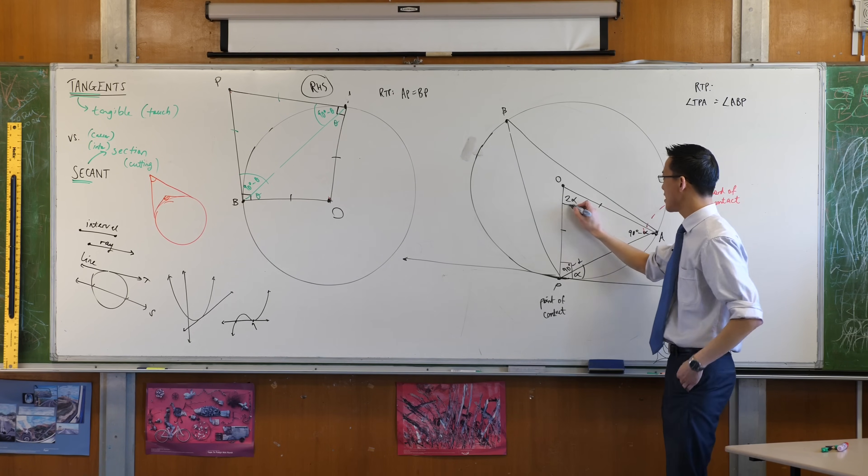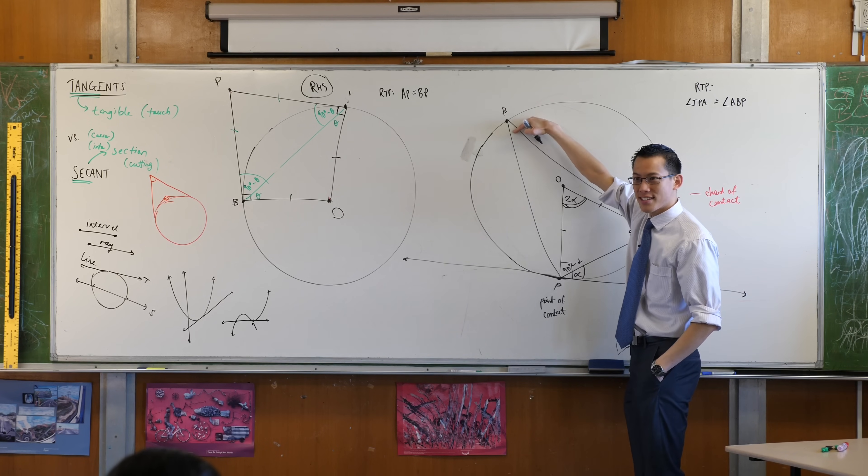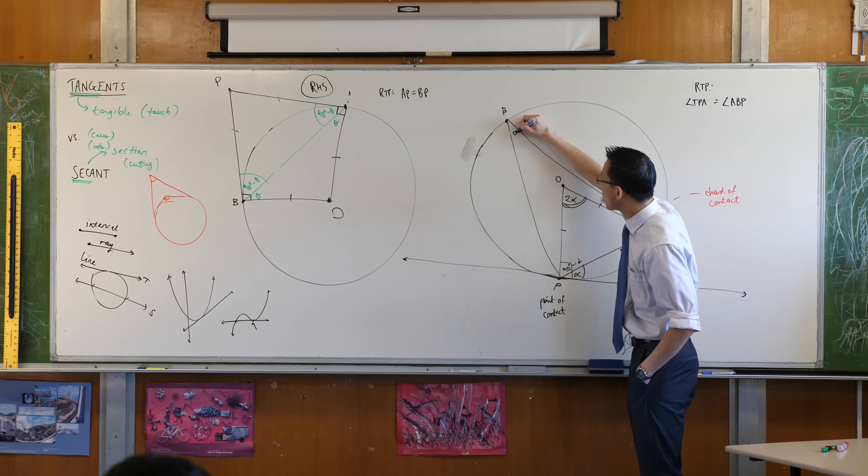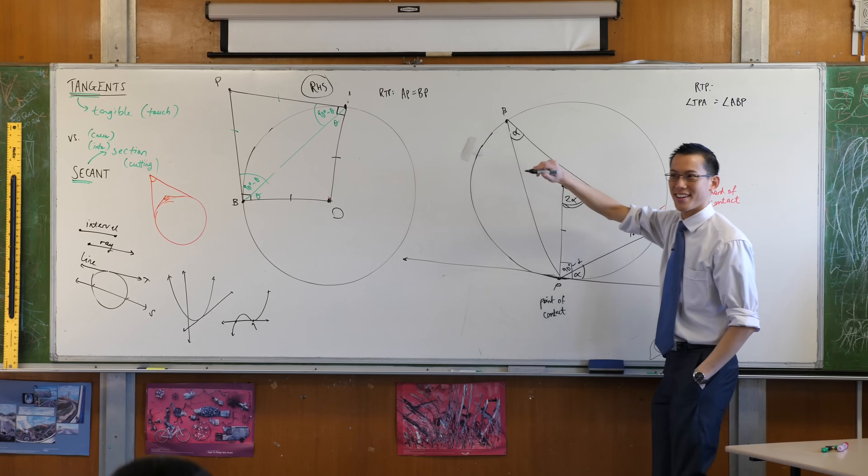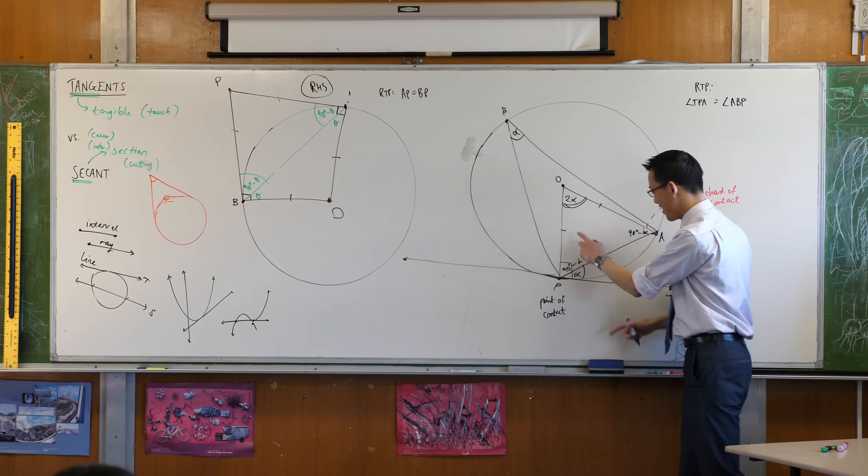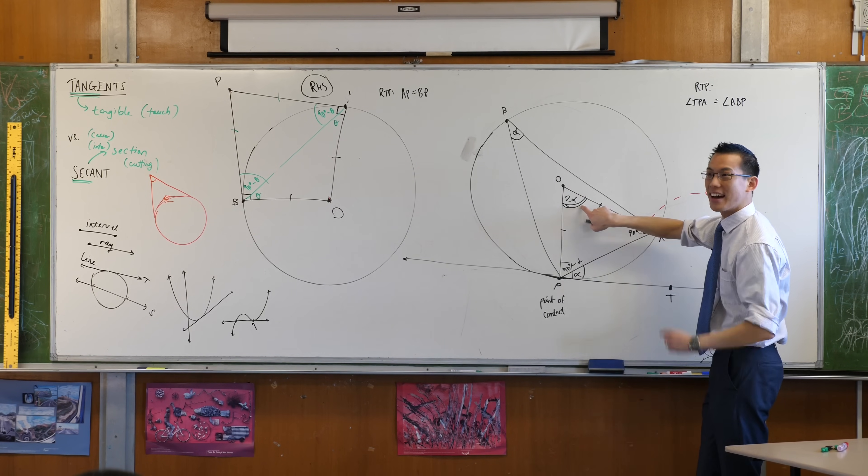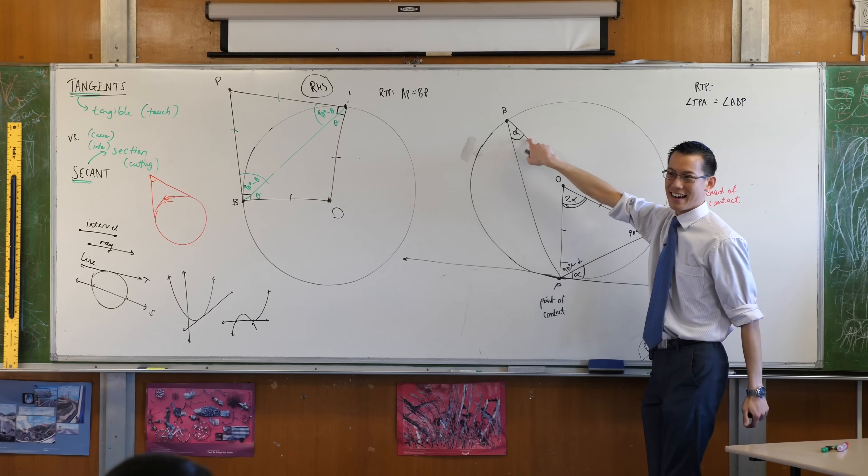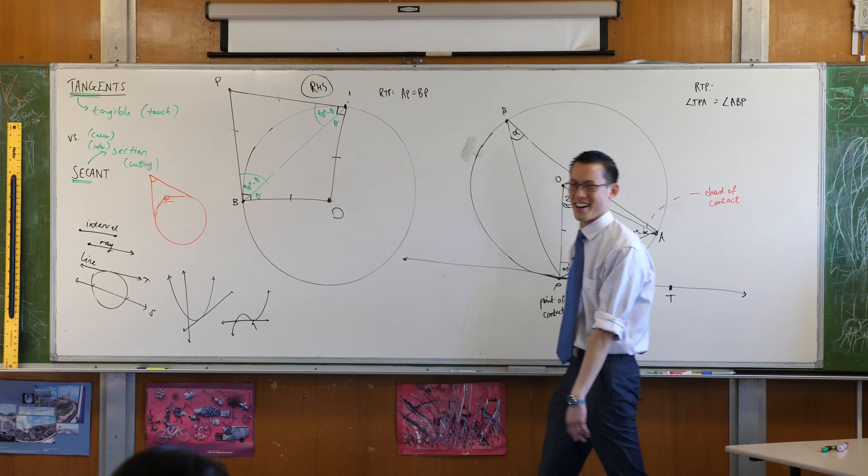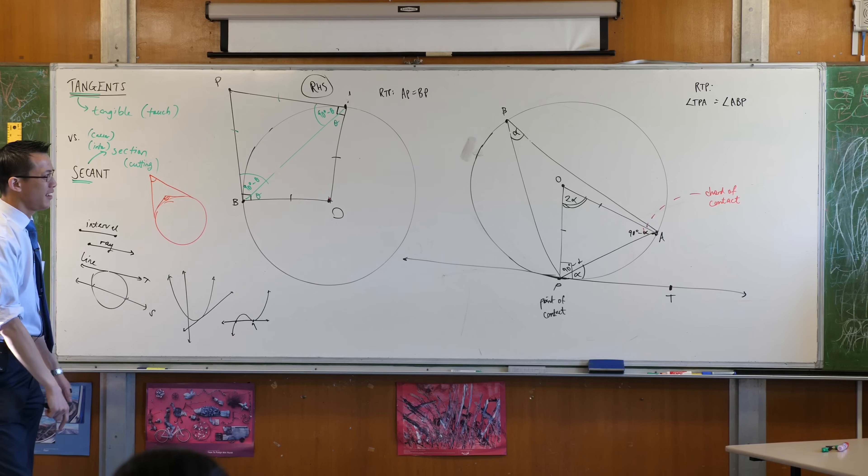But if this is 2 alpha, remember where we're going, right? This has to be alpha. What's the reason? What's the reason? Because the angle at the center, standing on this arc AP, the angle at the center is double the angle at the circumference that's on the same arc. That's really nice. You see how they all come together, right? It's quite beautiful.